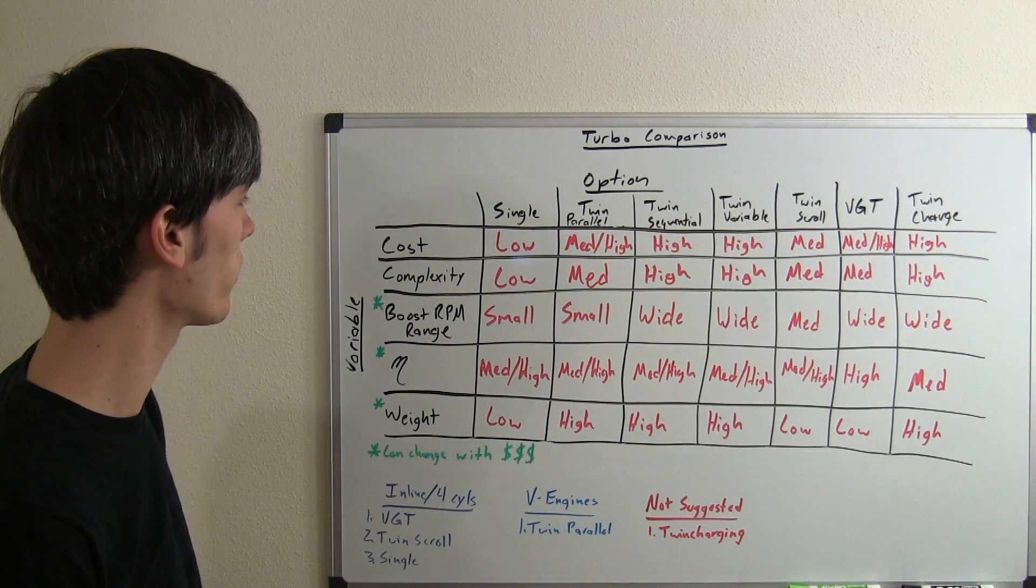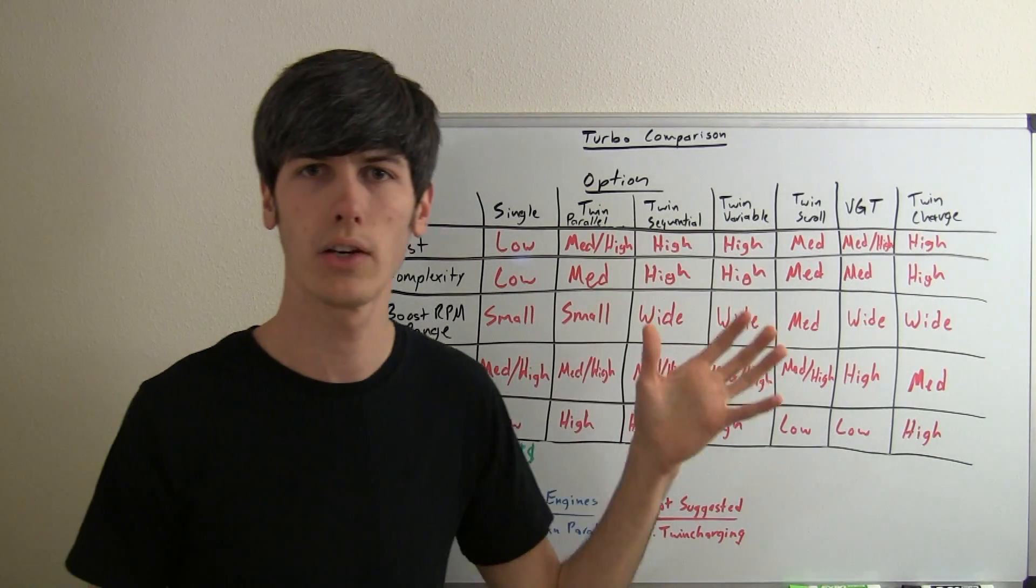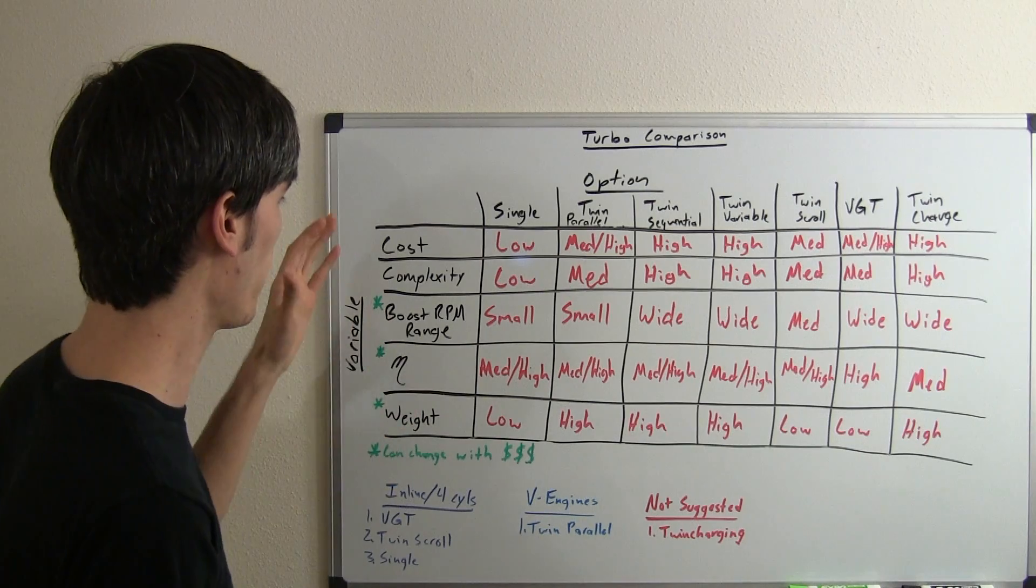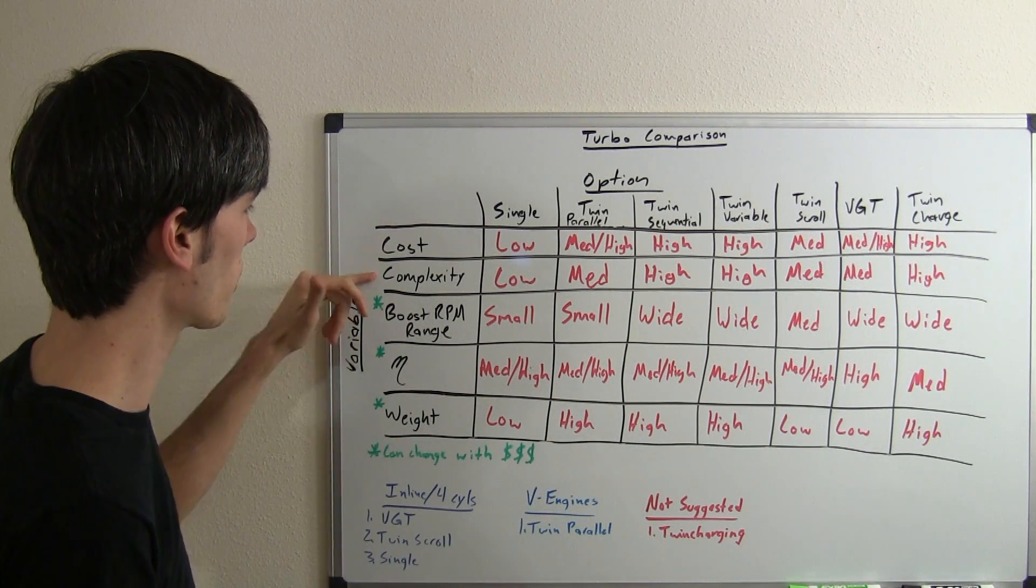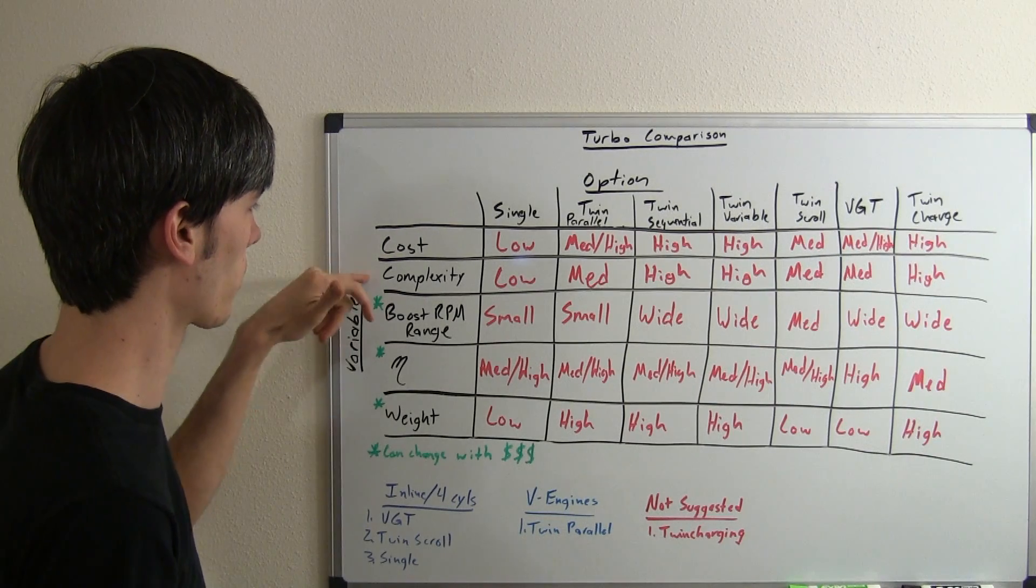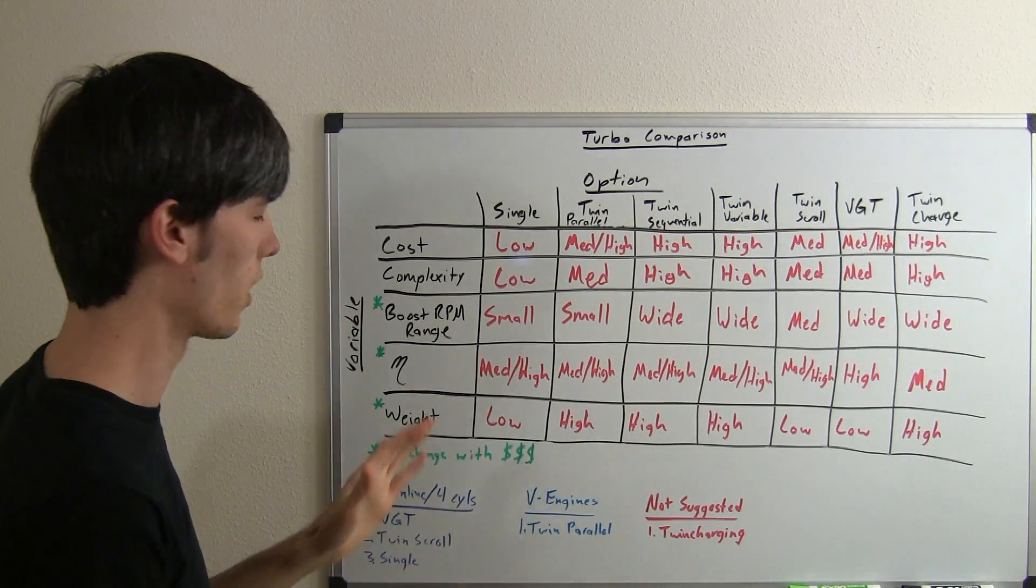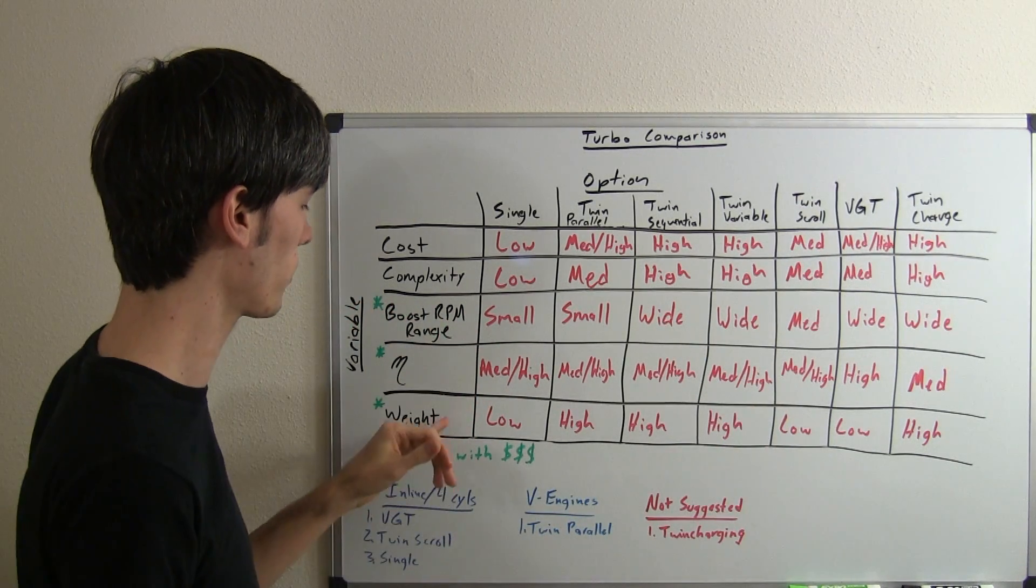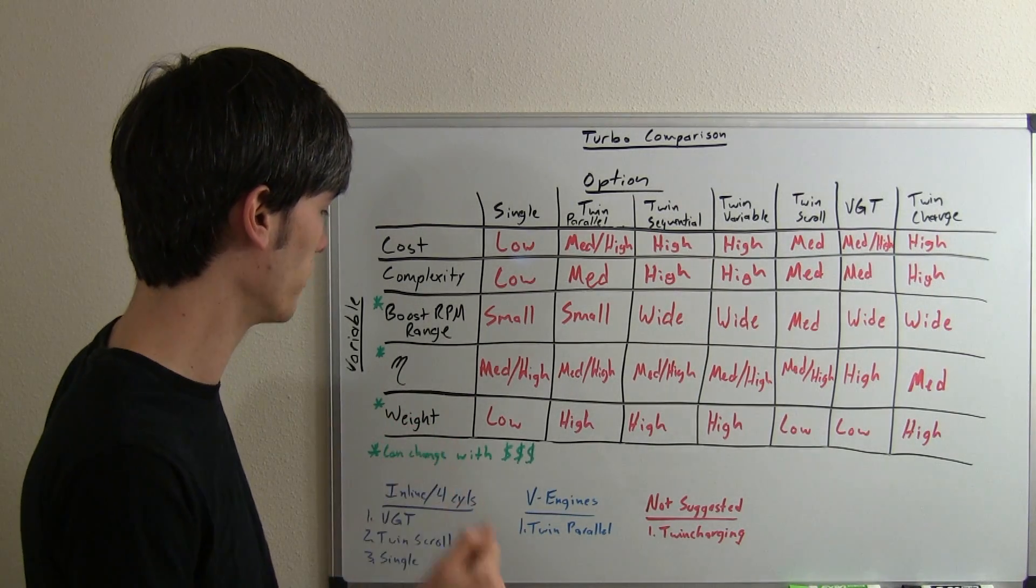I've got seven different variants up top here, which I have videos on all of these. I will have videos linked in the video description if you'd like to check them out. And then what I'm going to be using to compare each of these systems: cost, complexity—you want the complexity to be low—boost RPM range, you want that to be really wide across the whole rev range to have boost, the efficiency of the system, and the weight. Of course you want weight to be low and efficiency to be high.